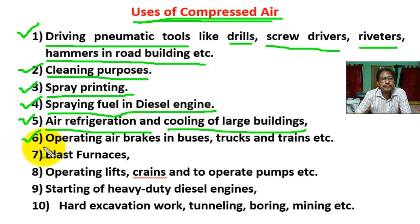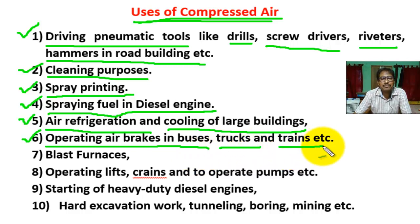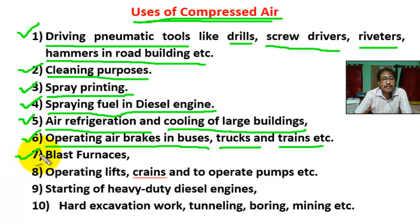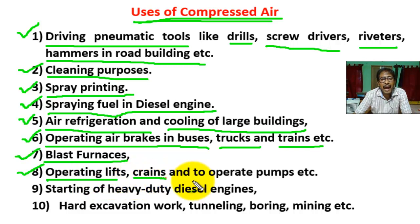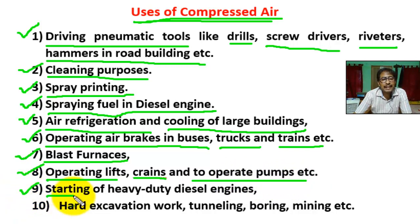Number six: operating air brakes in buses, trucks, and trains — air brakes are used. Number seven: compressed air used in blast furnaces. Number eight: compressed air used in operating lifts, cranes, and to operate pumps, etc. Number nine: starting of heavy duty diesel engines.